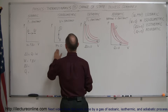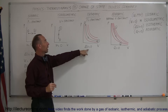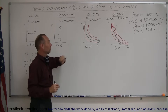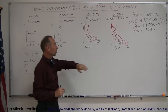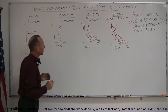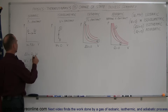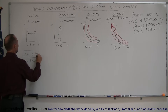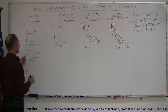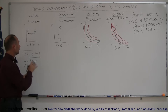So to summarize: for isovolumetric, work is zero; for isothermic, change in internal energy is zero; and for adiabatic, Q is zero. This is all related to the first law of thermodynamics, which states that the change in internal energy of a gas equals the heat added to the gas minus the work done by the gas.